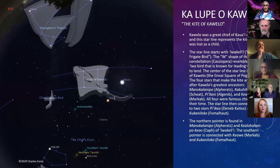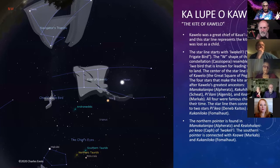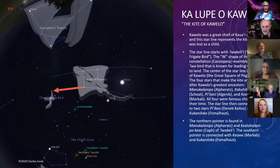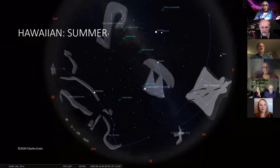The Kite of Kaelo's star line starts with the Chief Frigate Bird — the constellation Cassiopeia, that bent W — representing the Iwa Bird known for leading voyagers to land. The center of the star line is the Kite of Kaelo, which is the Great Square of Pegasus in the modern sky. The four stars making up the kite are named after Kaelo's greatest ancestors. In the Hawaiian summer sky, you can see the Navigator's Triangle, the Kite of Kaelo, the backbone, and the Chief's Fish Line all together. The Chief's Fish Line represents Scorpius.